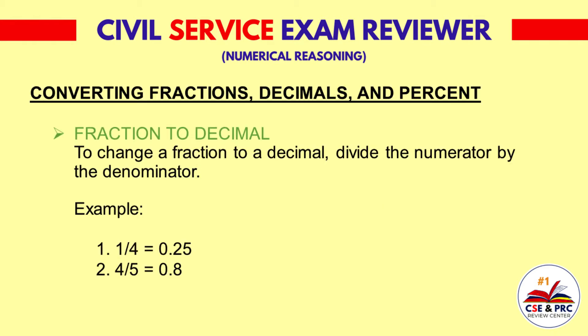Fraction to decimal. To change a fraction to a decimal, divide the numerator by the denominator. For example, one-fourth is equal to 0.25. This can be done by dividing the numerator, which is 1, by its denominator, 4, to get 0.25. The same procedure was done in example 2, which is 4-fifths is equal to 0.8.